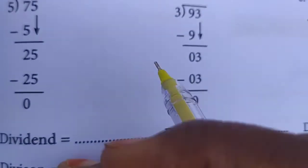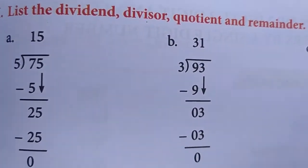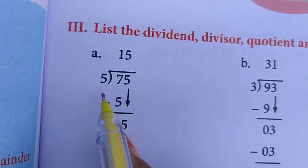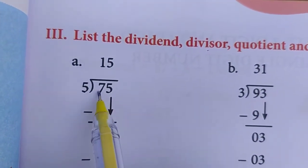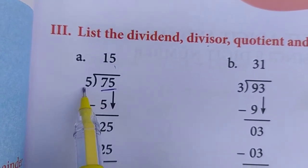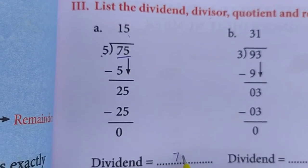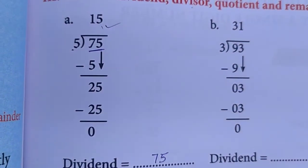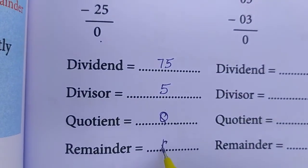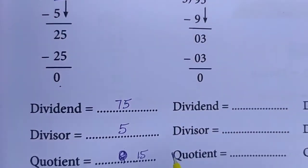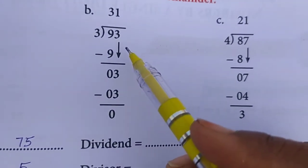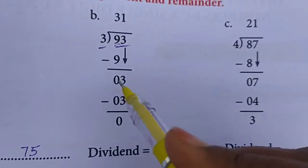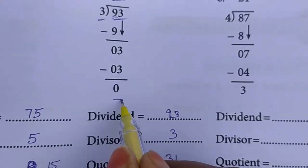Next page 133, list the dividend, divisor, quotient and remainder. 5, 75, 15. 75 divided by 5. So 75 is the dividend, 5 is the divisor, 15 is the quotient, 0 is the remainder. And in this, what is the dividend here? 93. What is the divisor? 3. What is the quotient? 31. What is the remainder? 0.